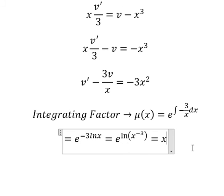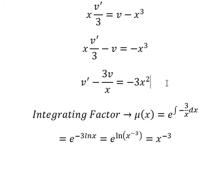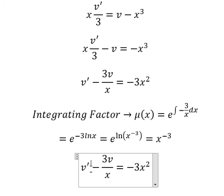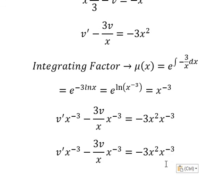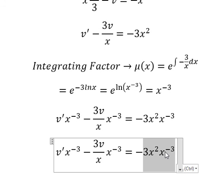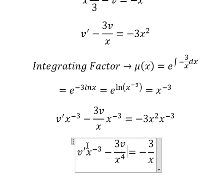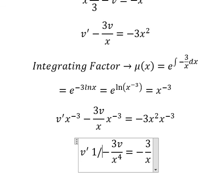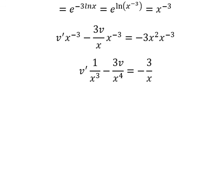So this gives us x to the power of negative 3, and this one is also x to the power of negative 3. This term becomes 3v over s to the power of 4, and this term becomes 1 over s to the power of 3. Next I will integrate both sides.